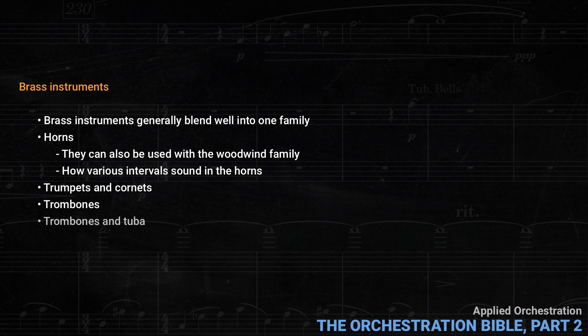There follows a section about trombones and tuba. Since the tuba has a fatter sound than the trombones, it doesn't blend perfectly with them. Some composers, notably Wagner, actually require a family of tubas in various registers for perfect blend. Then Koechlin looks at how to combine the horns and the heavy brass together. In this situation, the horns are normally alto and tenor instruments, ideal for enriching the middle register. The examples in the brass chapter range from doubling of a single line to full four-part writing, and as usual, Koechlin shows how the composers' choices are appropriate to the musical character.